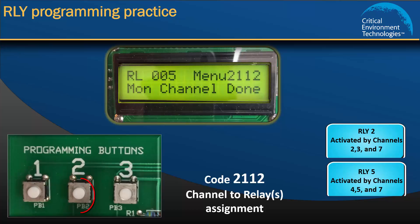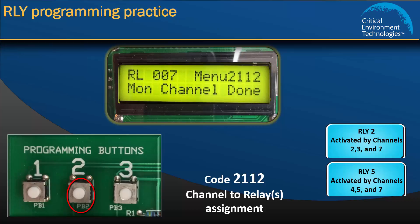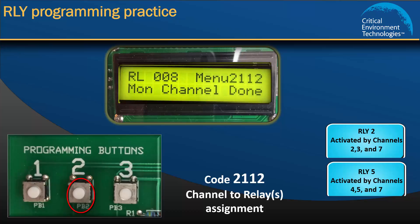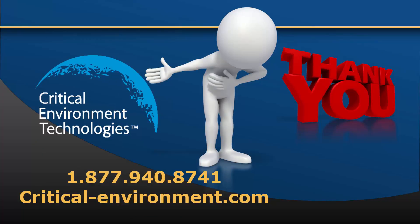Keep pressing 2 to move through the remaining Relays 6, 7, and 8. When you are done, the display will show "Finished" and the unit returns to normal operation. This completes the tutorial on how to program the relays inside the PDC. If you would like more information or in-depth training, you can sign up to take our training service courses. Please visit us at criticalenvironment.com or call 1-877-940-8741.